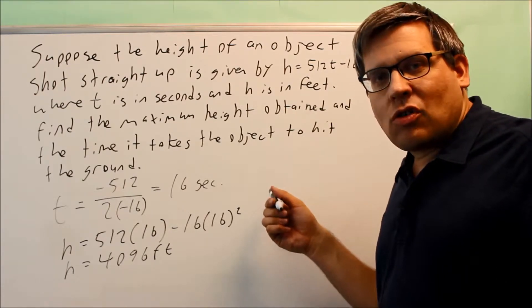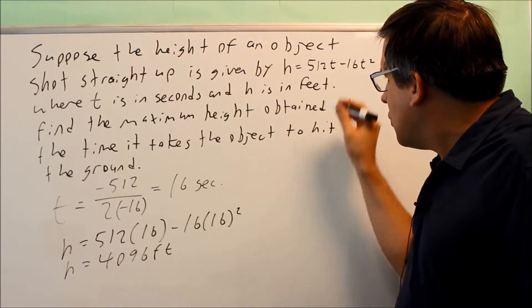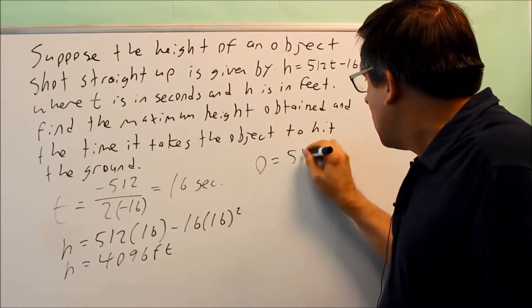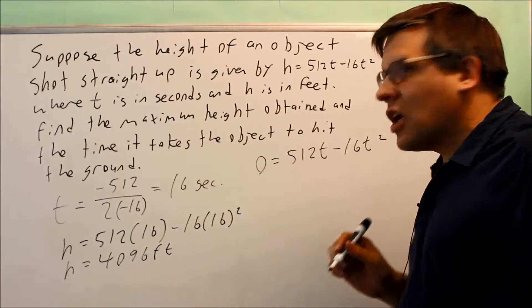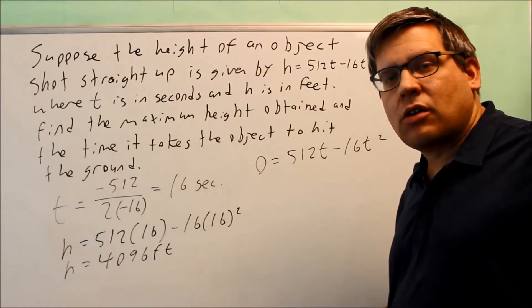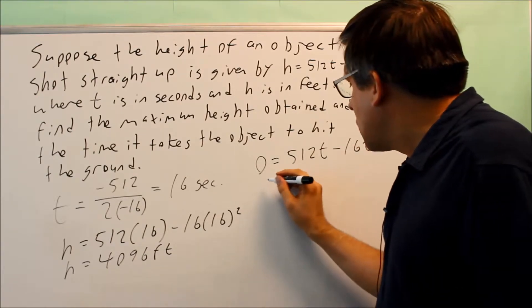The other way of doing it is a more algebraic approach, where you'd put a 0 in for the height. If it goes all the way up and comes down again, it'll hit the ground and that's going to be a height of 0.